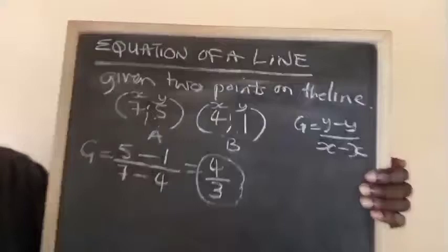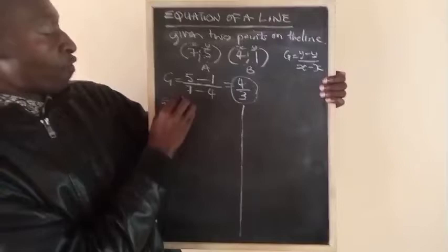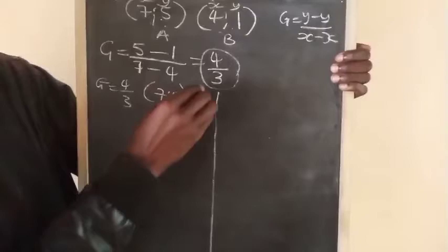It's the same method. Our gradient is 4 over 3. Then I will take the bracket which is 4, 1. I could take bracket x, y. We use the formula.